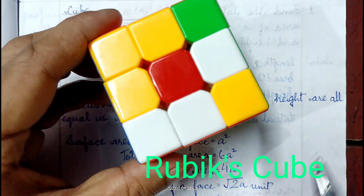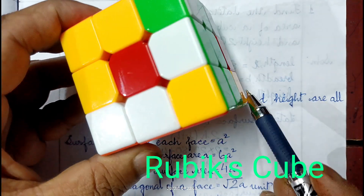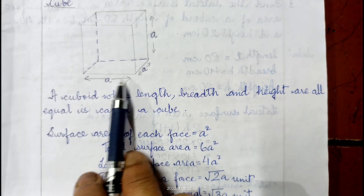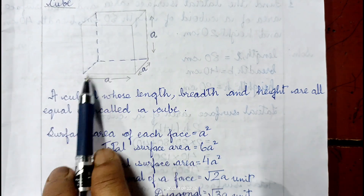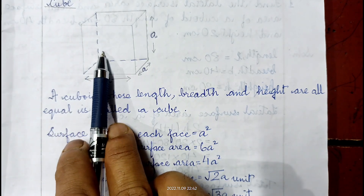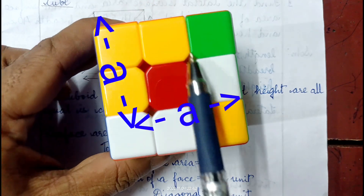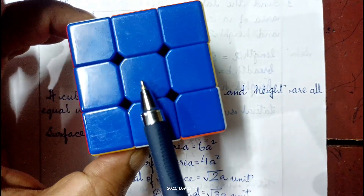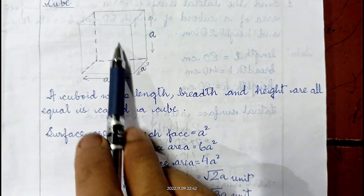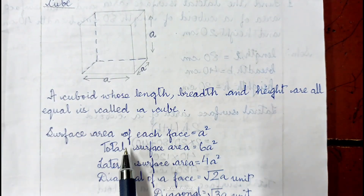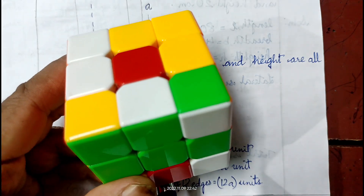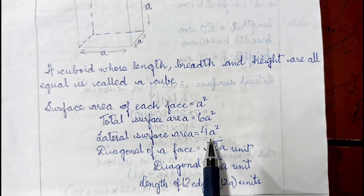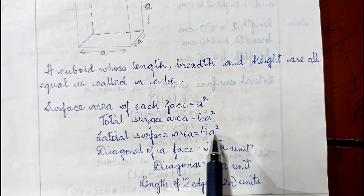In a cube, length, breadth, and height are all equal, so we call each side A. Area of each face = A². There are 6 faces, so total surface area = 6A². For lateral surface area, we exclude the top and base, leaving 4 faces, so lateral surface area = 4A².